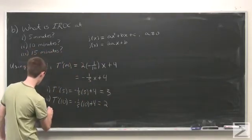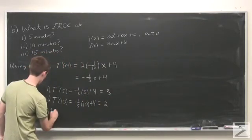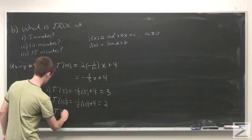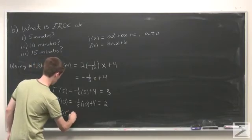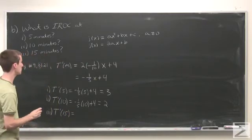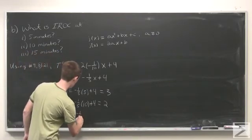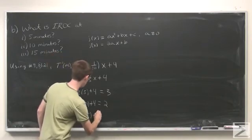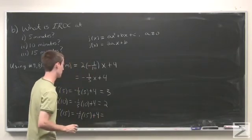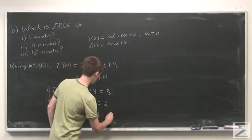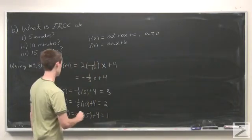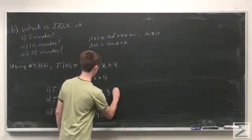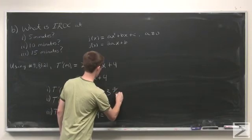T'(15) equals -1/5 times 15 plus 4, which is -3 + 4, or 1. All of these are in degrees Fahrenheit per minute.